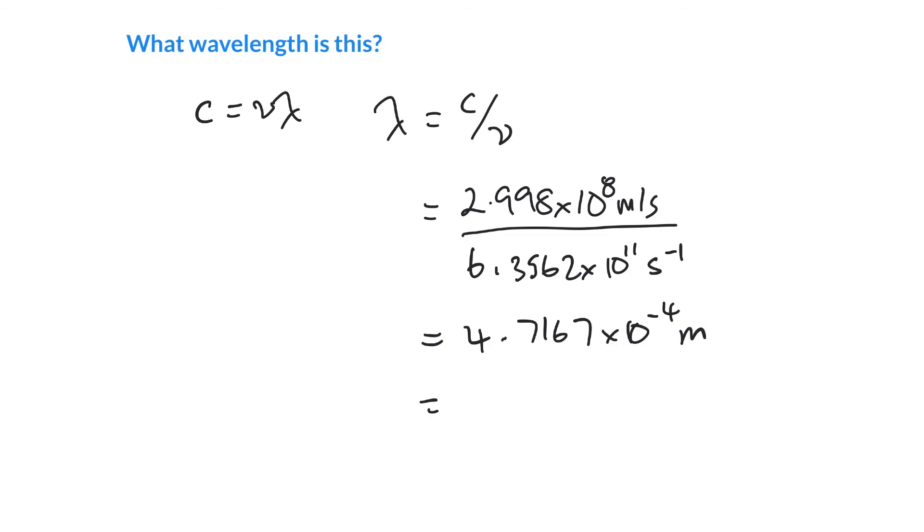We can calculate wavelength. I get 4.7167 times 10^-4 meters. We can rewrite that as 472 times 10^-6, so 472 micrometers. That turns out to be in the microwave part of the electromagnetic spectrum.